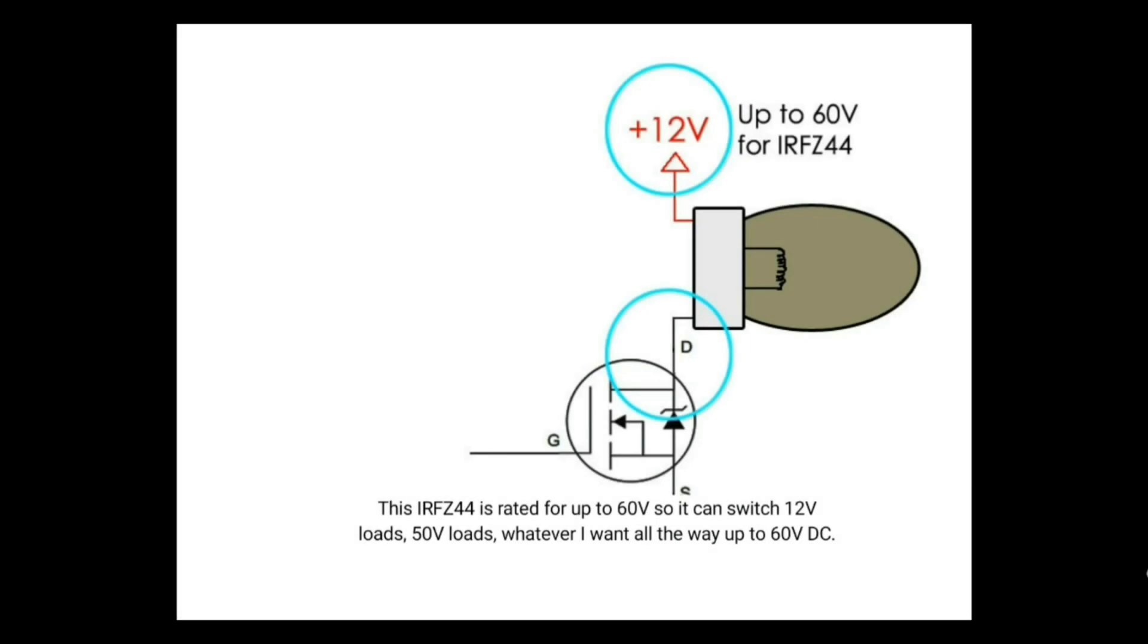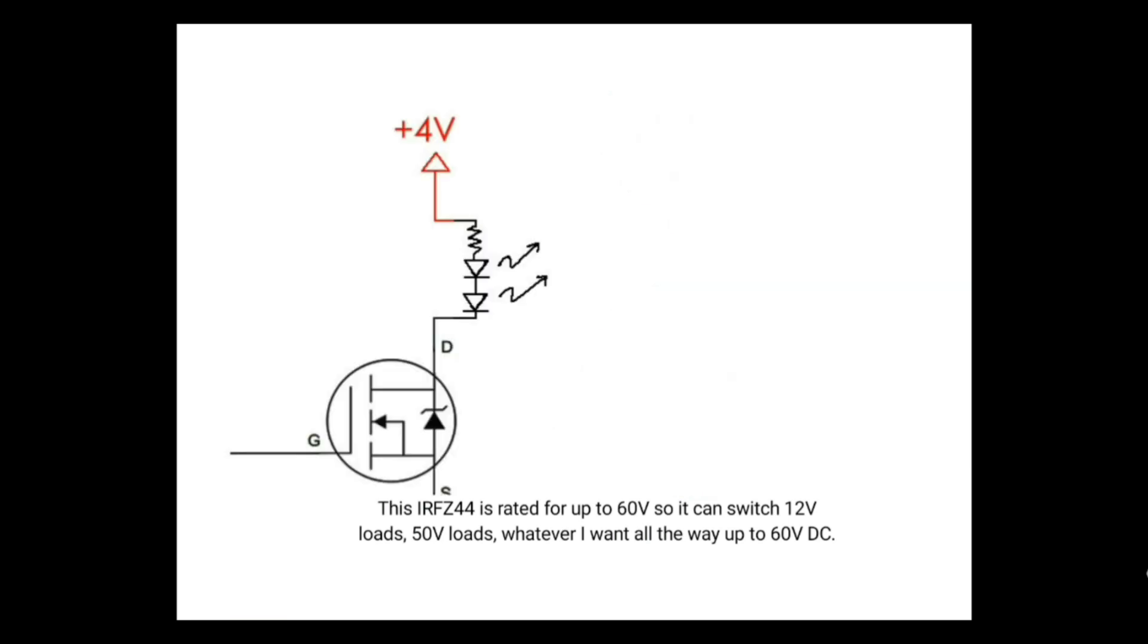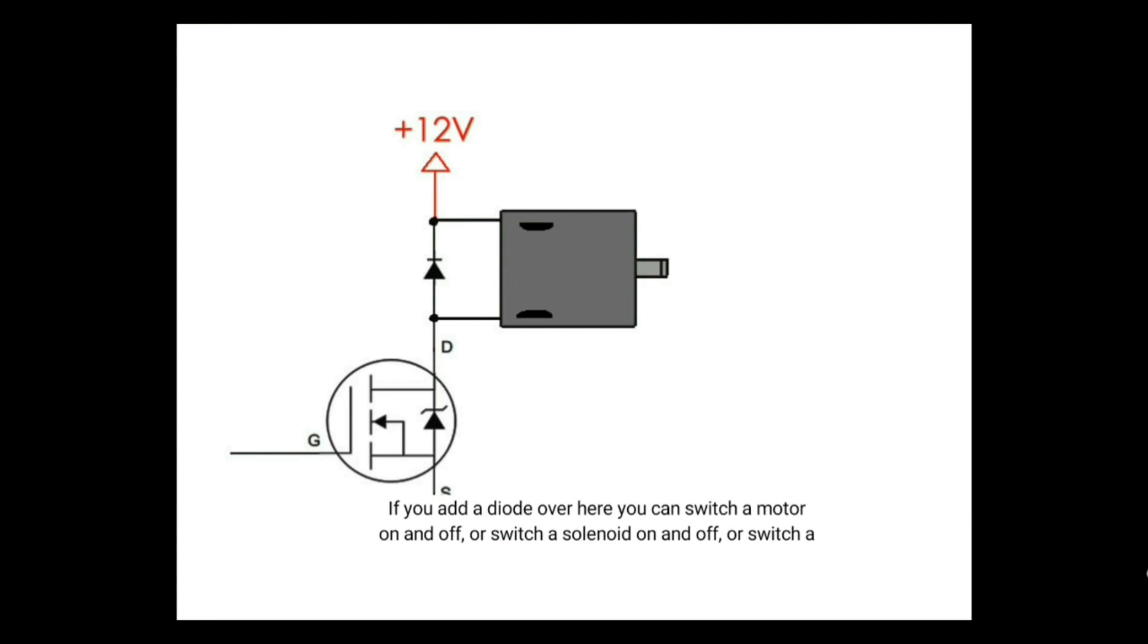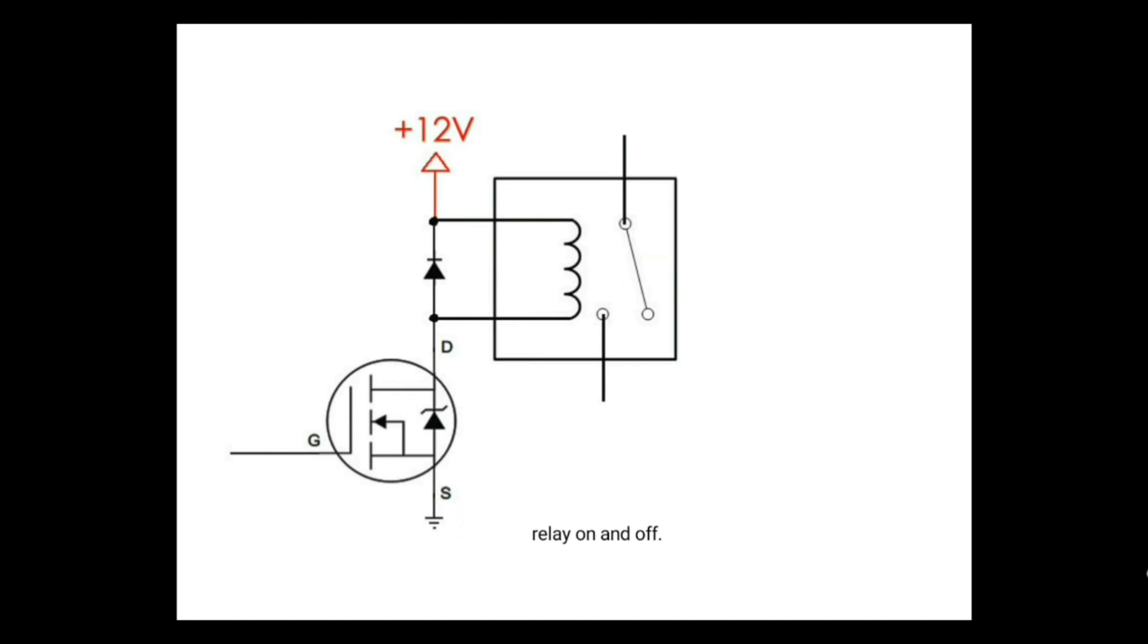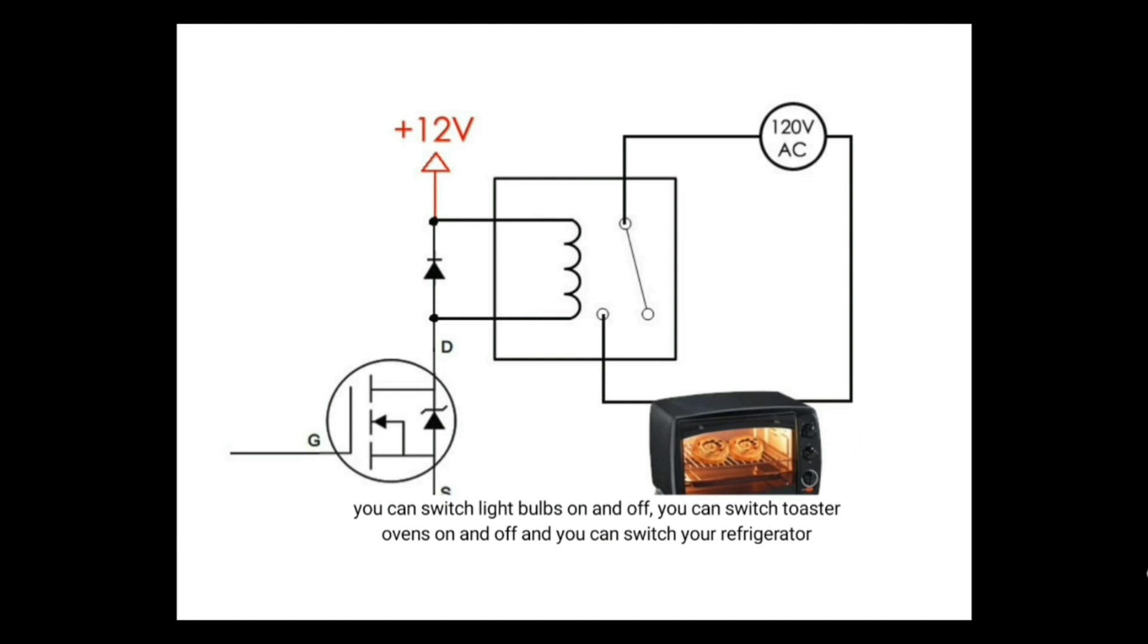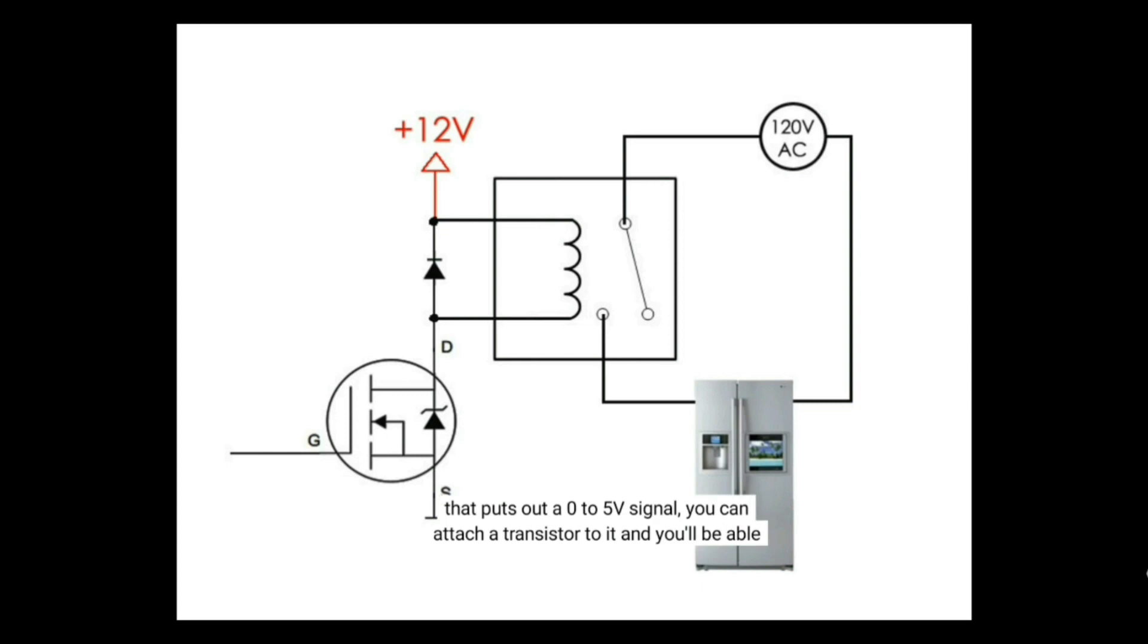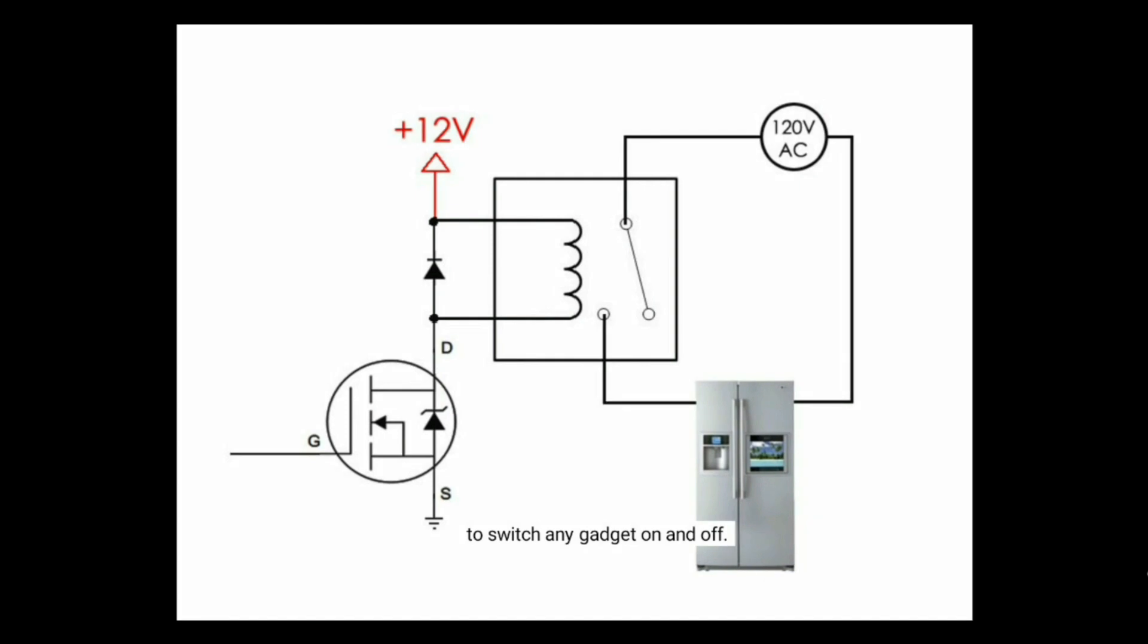So, it can switch 12 volt loads, 50 volt loads, whatever I want, all up to 60 volts DC. I could switch LEDs on and off. I could switch a string of low voltage Christmas lights on or off. If you add a diode over here, you can switch a motor on and off or switch a solenoid on and off or switch a relay on and off. And once you have a relay being switched, you can switch light bulbs on and off, you can switch toaster ovens on and off, or you can switch your refrigerator on and off. Basically, if you can get a system that puts out a 0 to 5 volt signal, you can attach a transistor to it and you will be able to switch any gadget on and off.